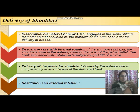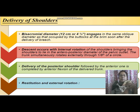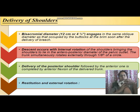Next, the bisacromial diameter of 12 cm engages in the same oblique diameter as the buttocks. After delivery of the breech, the bisacromial diameter engages. There is internal rotation of the shoulders, bringing them to lie under the anteroposterior diameter of the pelvic outlet. The trunk spontaneously rotates through one-eighth of a circle, and external rotation of the trunk also occurs. Delivery of the posterior shoulder is followed by the anterior shoulder, then restitution to the same position.